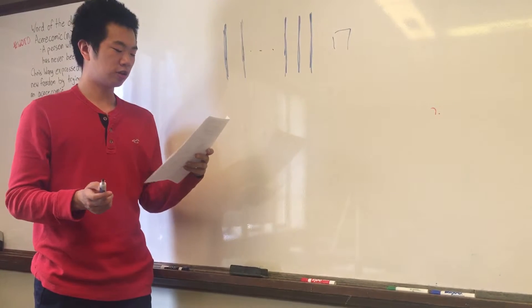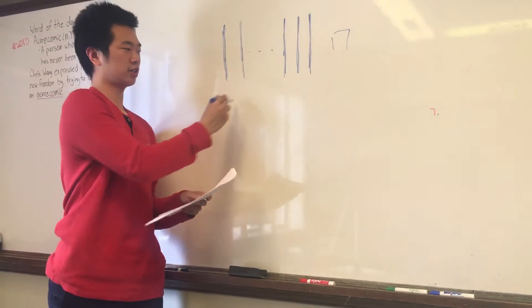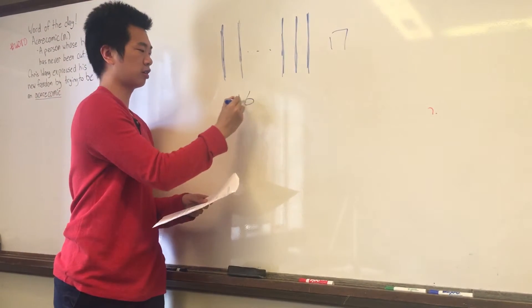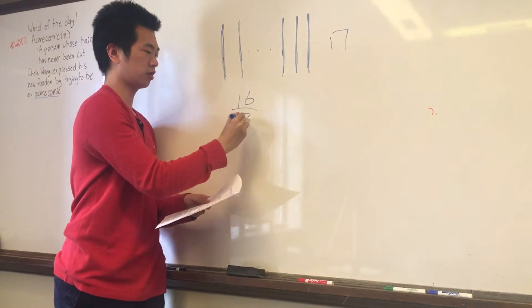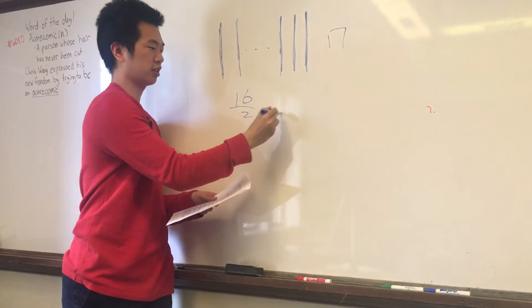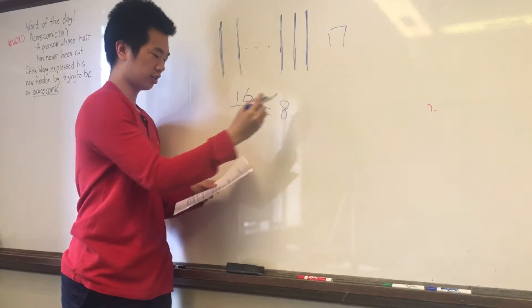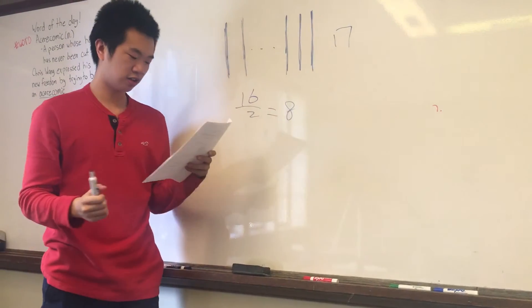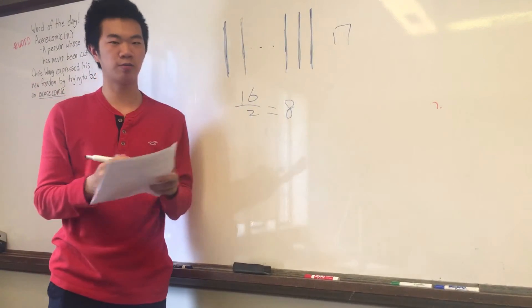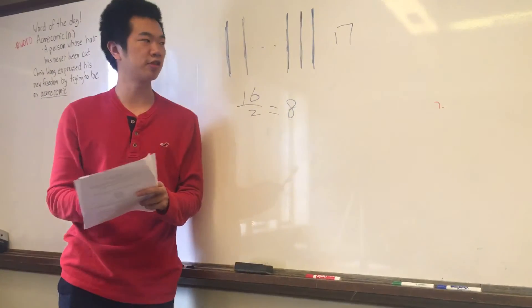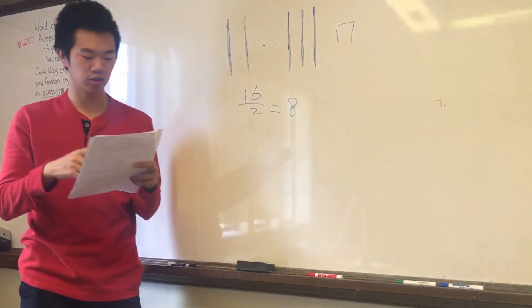So when you divide 16 by 2, you get 8. That's how many white bars you have in this problem.